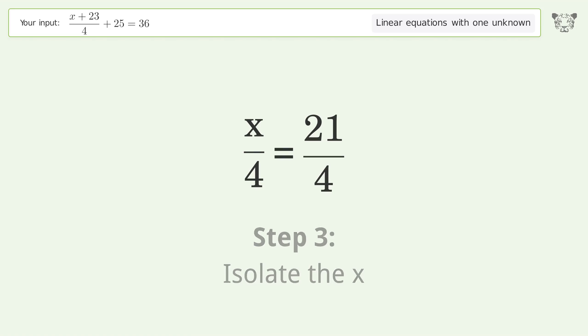Isolate the x. Multiply both sides by 4. Group like terms.